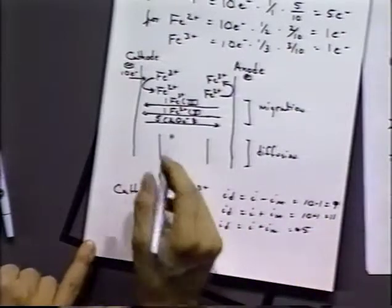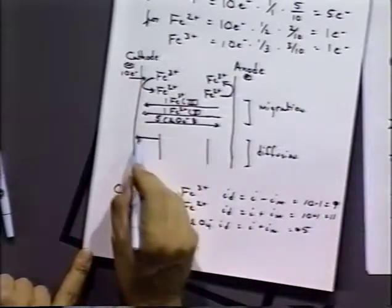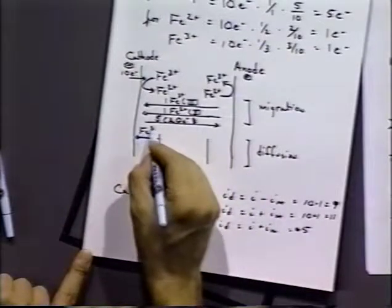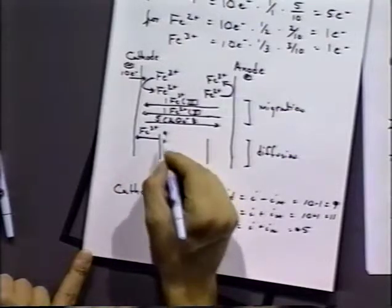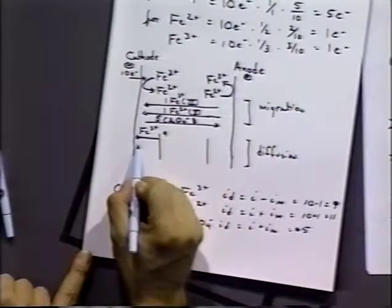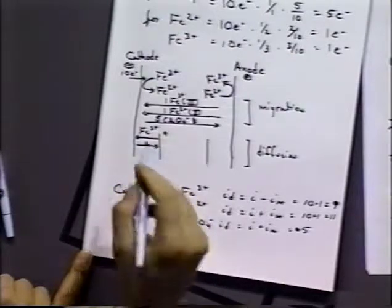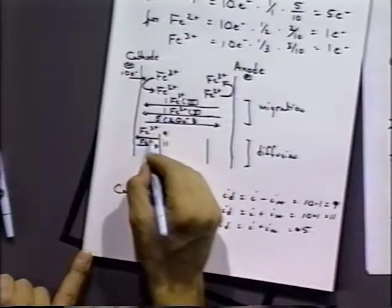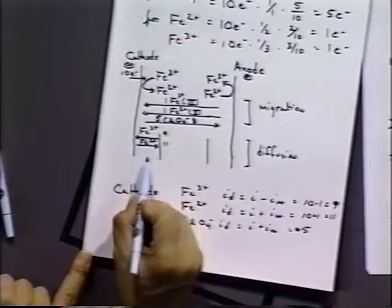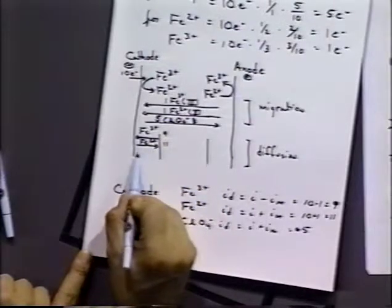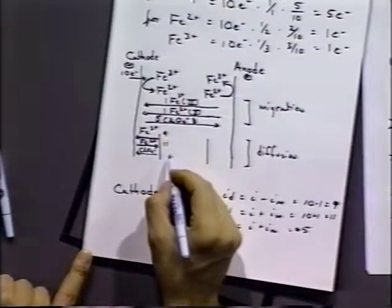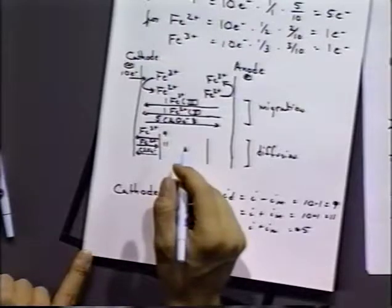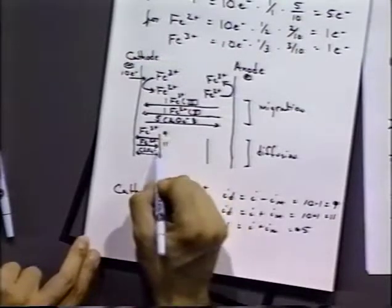So if we draw out a cathode, we see that coming towards the electrode, there is iron three plus. And there is nine, essentially nine electrons worth of iron three plus coming that way. There is essentially eleven electrons of iron two plus going the opposite way. And there is essentially five electrons of perchlorate coming towards the cathode, that are away from the cathode.